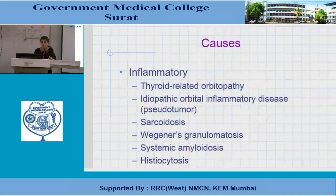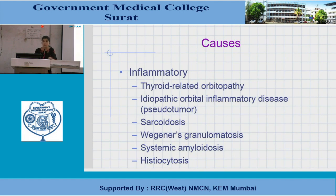Inflammatory causes are a common cause of proptosis: thyroid-related orbitopathy and idiopathic orbital inflammatory disease, that is pseudotumor. There are also infectious-type inflammatory conditions like histiocytosis, sarcoidosis, Wegener's granulomatosis, and amyloidosis.